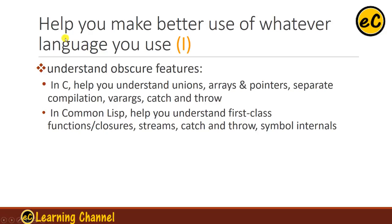Here we list four different things that can help you make better use of whatever language you use. First, to understand obscure features. In C, this helps you understand union, arrays, and pointers, separate compilation, varargs, catch and throw. In Common Lisp, we try to help you understand first-class functions, closures, streams, catch and throw, and symbol internals. These are the benefits of studying programming languages — to understand obscure features.